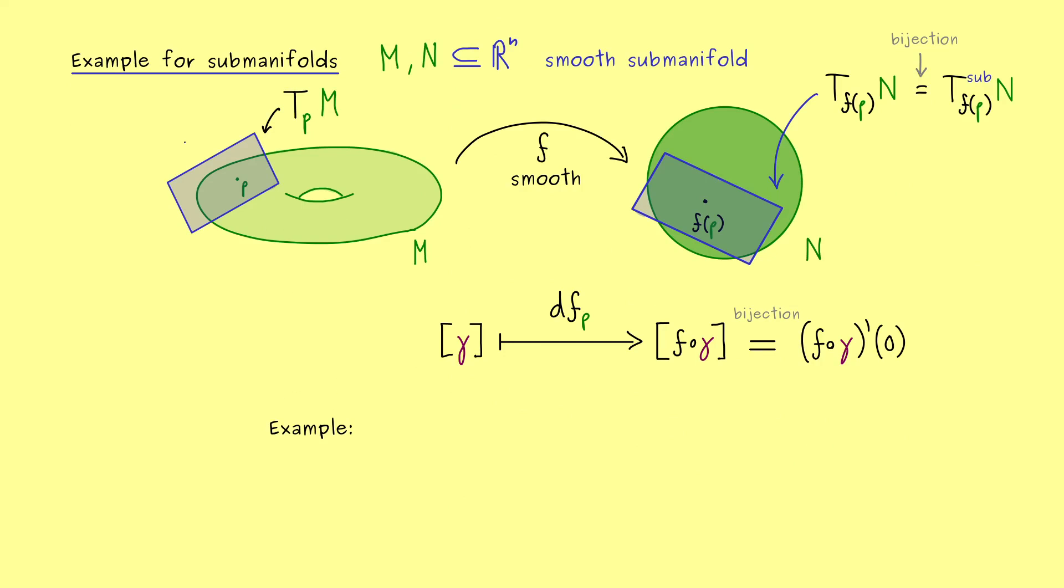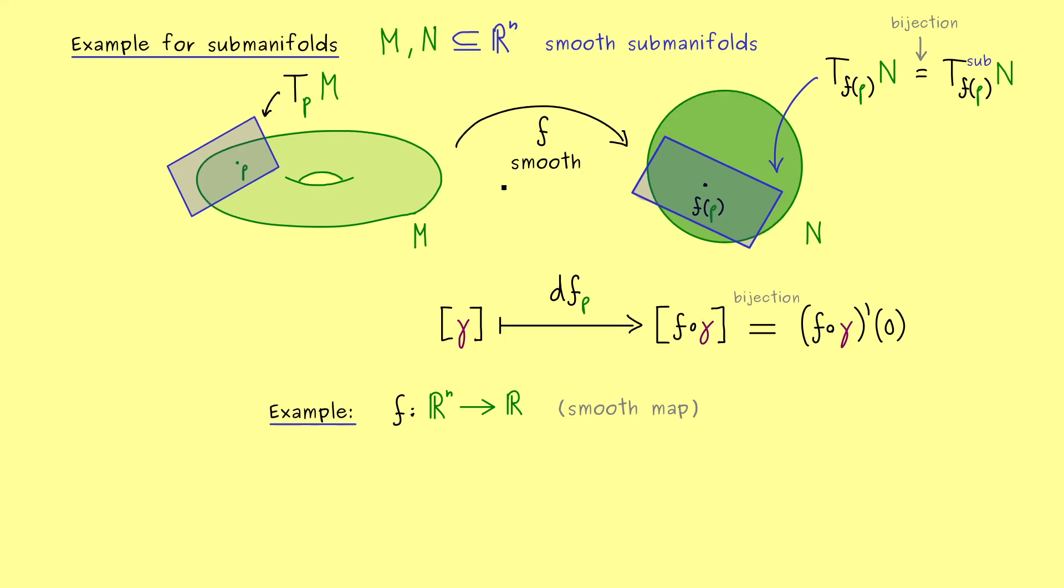We can make it very concrete by considering a C1 map from R^n into R. So we have very simple submanifolds here on the left hand side and on the right hand side. As I said we want a continuously differentiable function here, or in our terms just a smooth map. Then we can just calculate what df_p of our equivalence class of γ is. By our bijection before we can rewrite that as an ordinary derivative. Since f is differentiable we can apply the chain rule here.